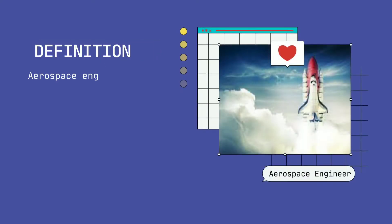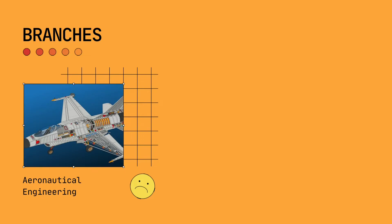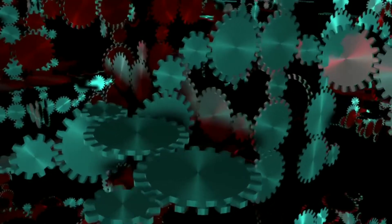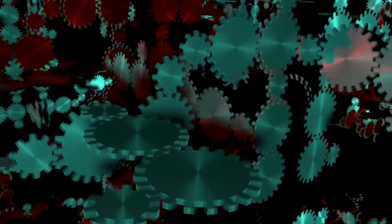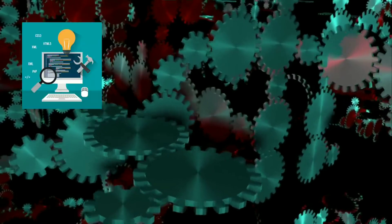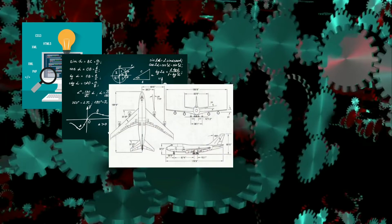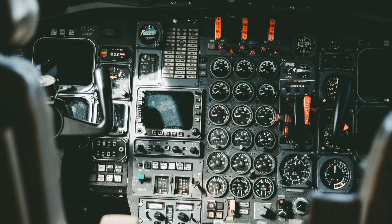To begin with the definition, Aerospace Engineering is the primary field of engineering concerned with the development of aircraft and spacecraft. It has two major and overlapping branches: Aeronautical Engineering and Astronautical Engineering. A large part of Aerospace Engineering consists of Mechanical Engineering, covering a wide range of topics including computer application, structures, mathematics, physics, drafting, electricity, robotics, and aeronautics. It also covers aspects of Avionics Engineering.